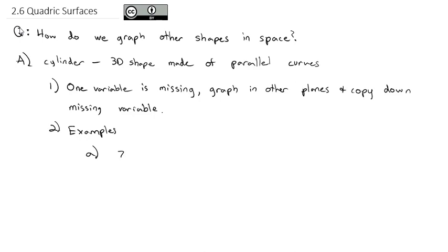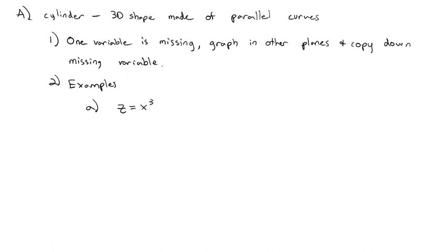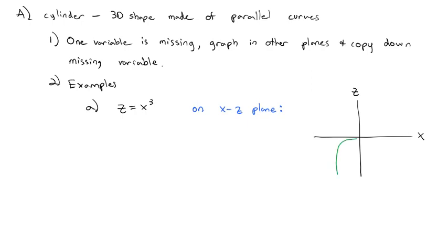The first graph we're going to do is z equals x cubed. The y variable is missing, so we're going to graph it on the x-z plane. We know that the graph of anything cubed comes up from the negative, levels off at 0, and then takes off after that.